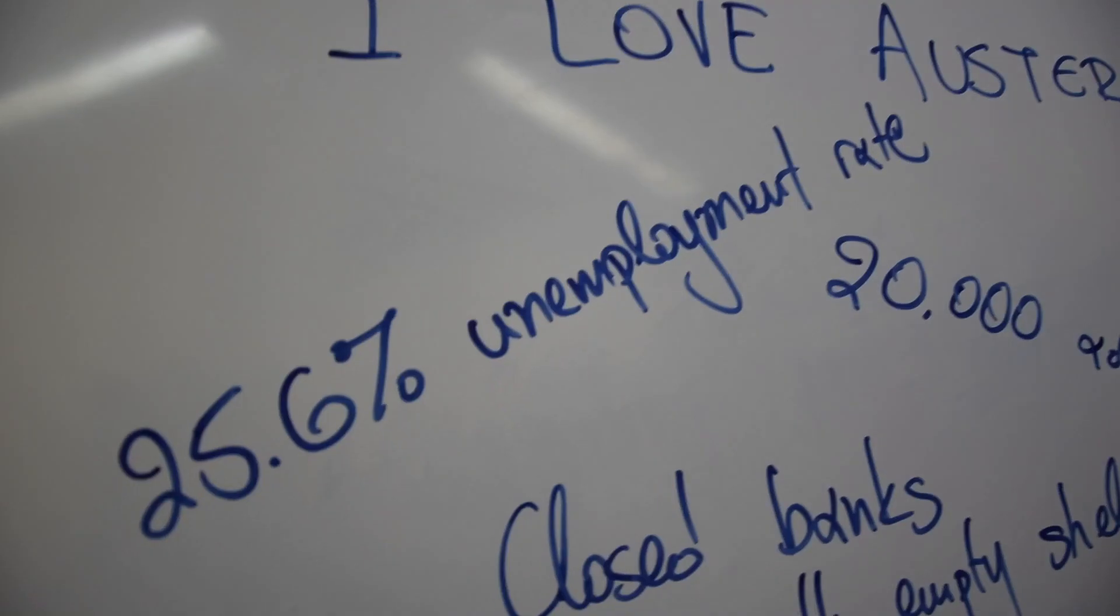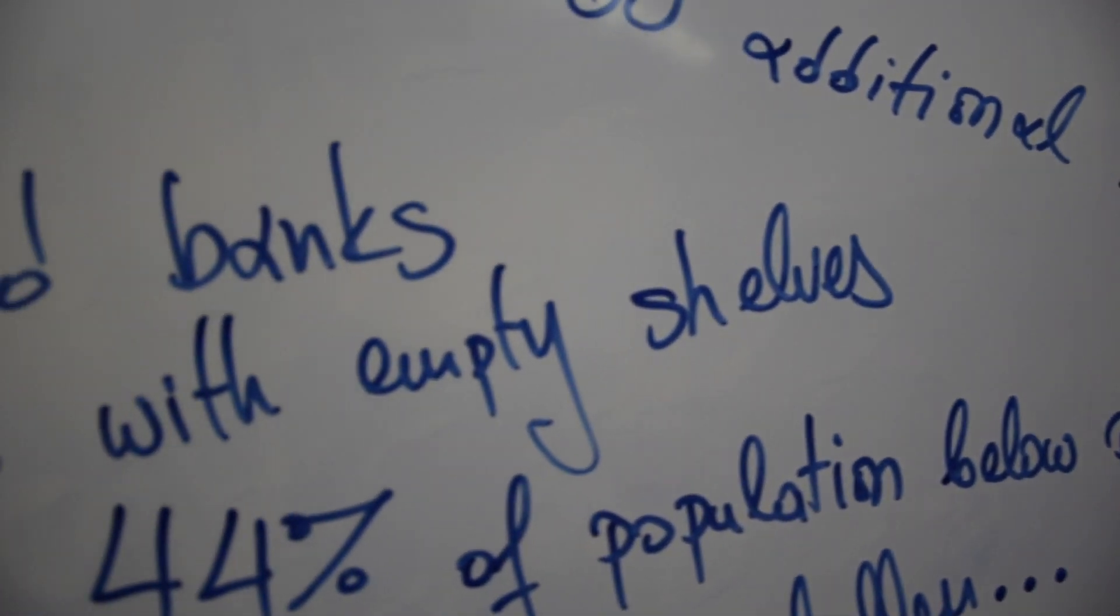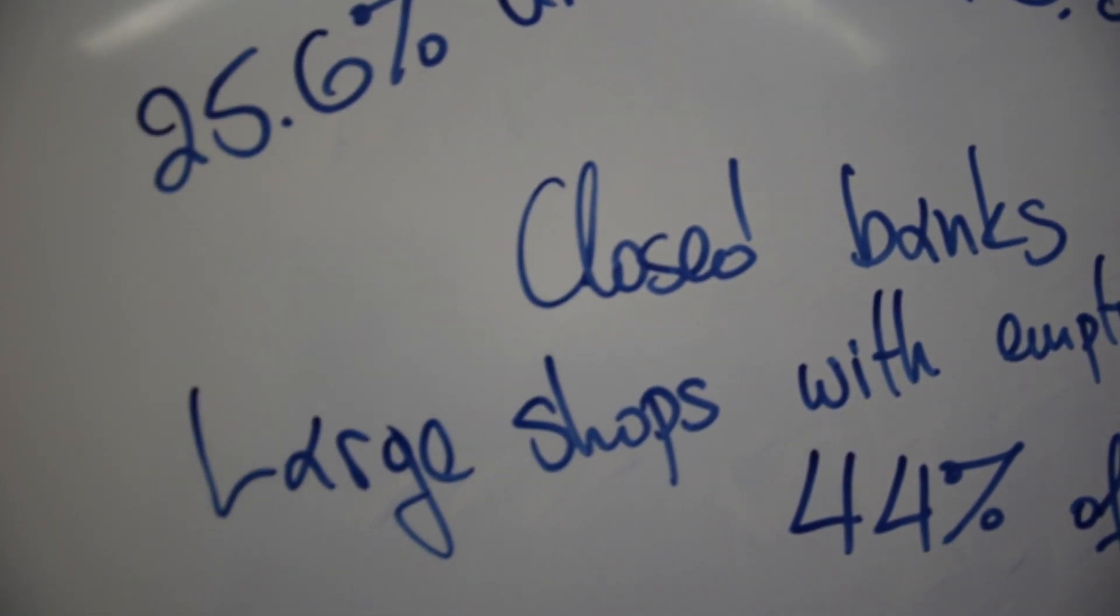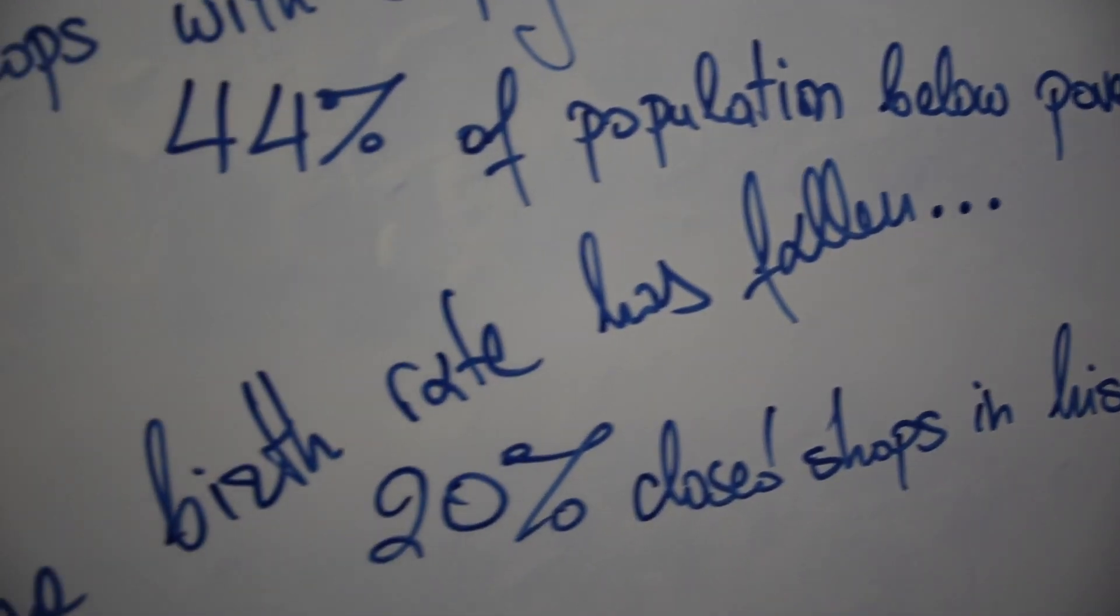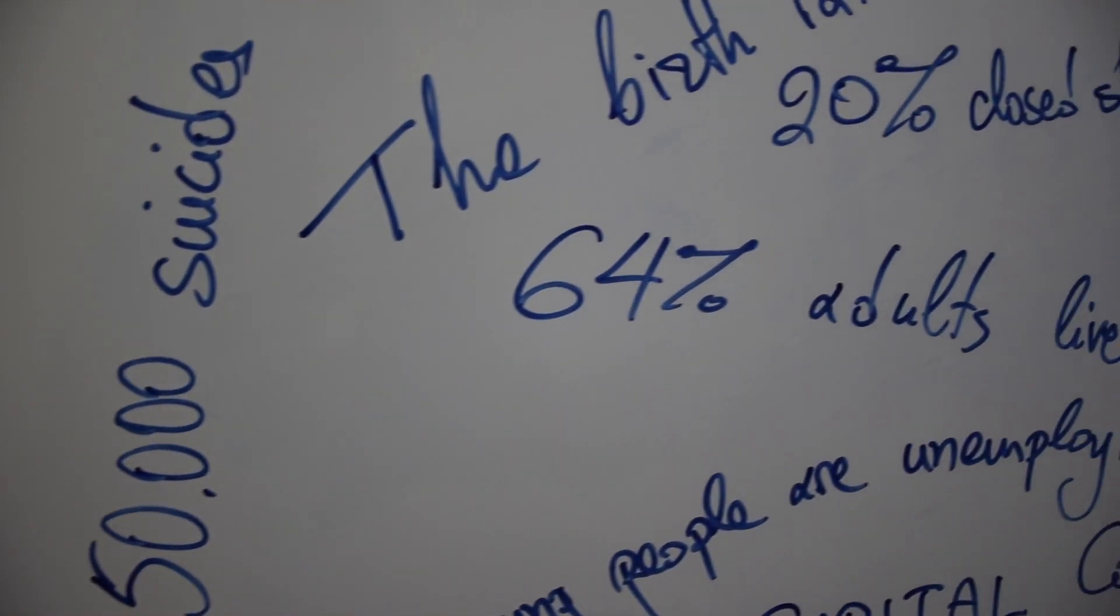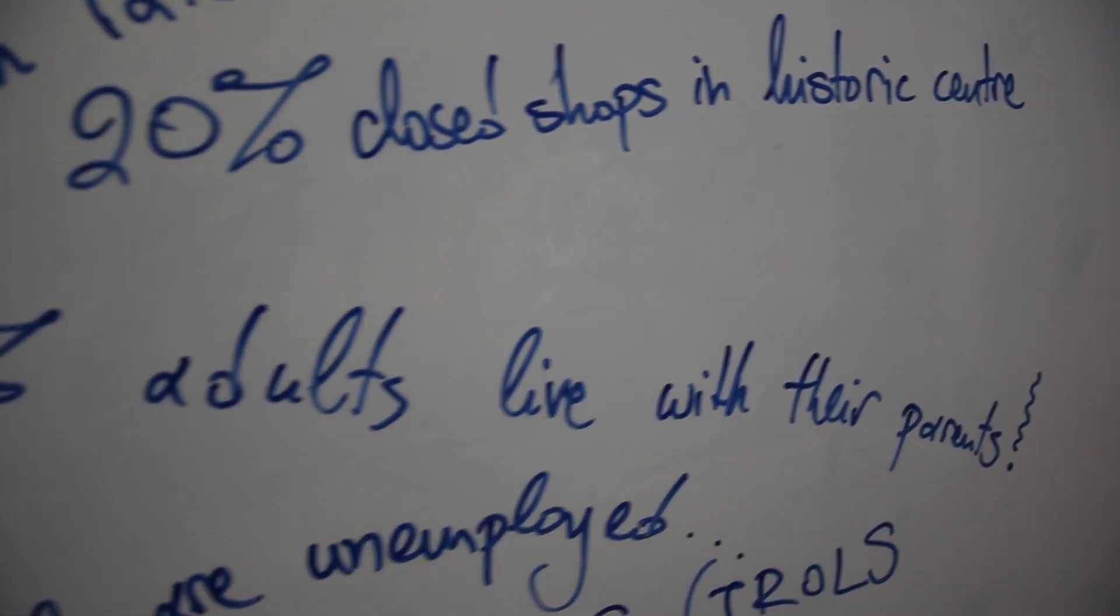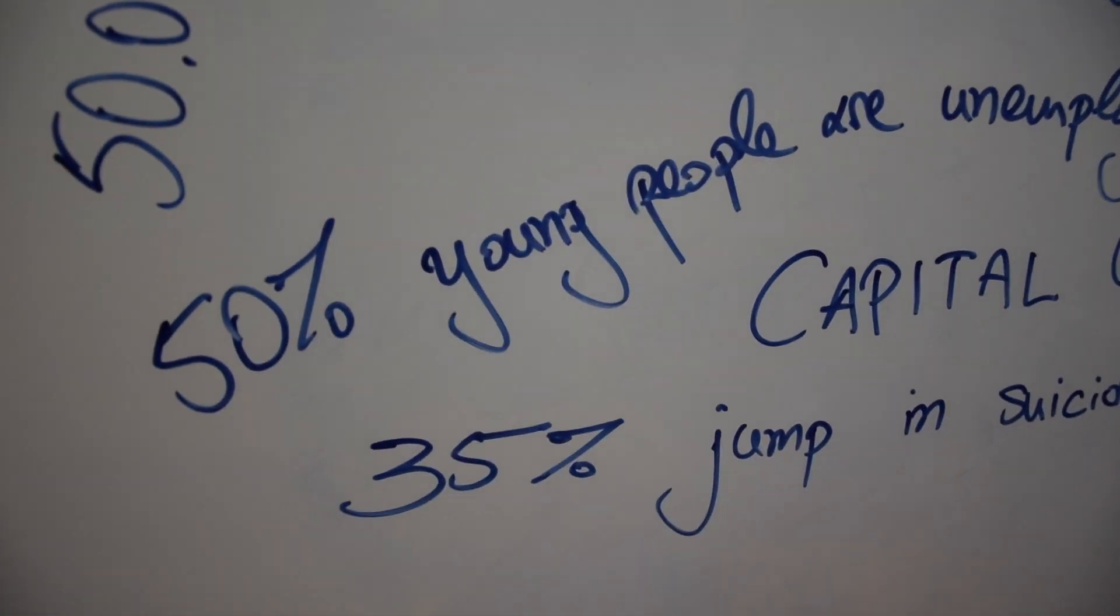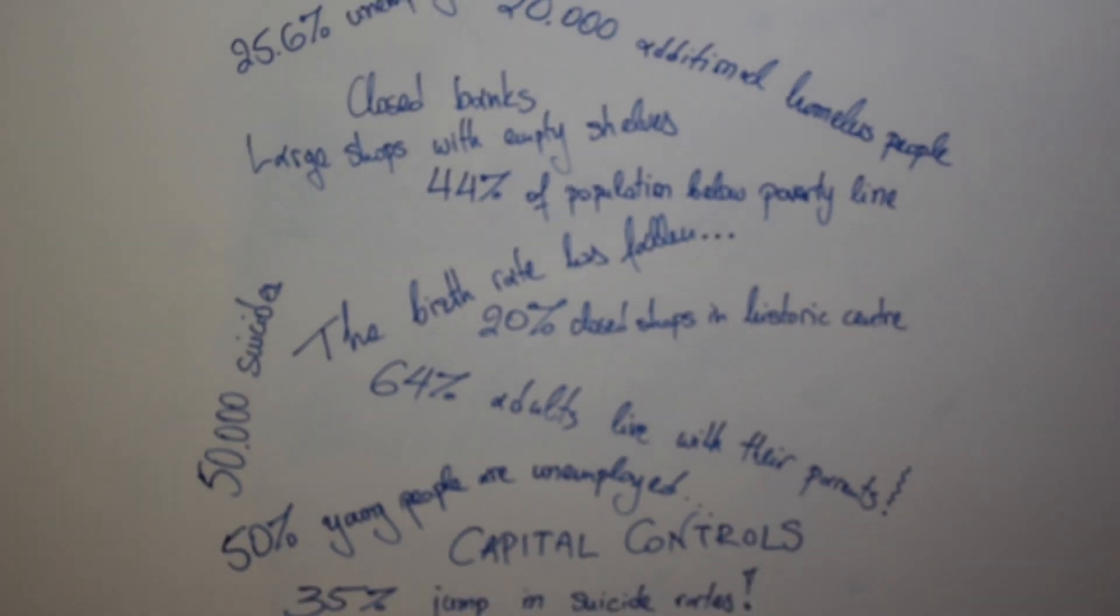25.6% unemployment rate, 20,000 additional homeless people, closed banks, large shops with empty shelves, 44% of population below poverty line, 50,000 suicides, the birth rate has fallen, 20% closed shops in historic center, 64% adults live with their parents, 50% young people are unemployed, capital controls, 35% jump in suicide rates.